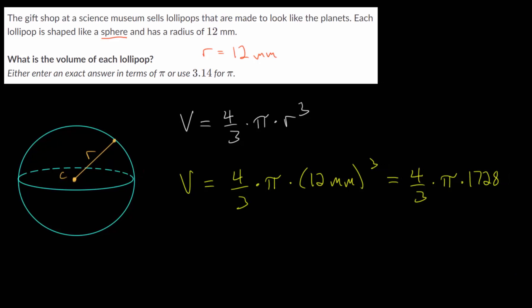So we have four-thirds multiplied by pi multiplied by 1,728. And we multiplied millimeters three times, so we will have cubic millimeters. And if we divide this by 3, that brings it to 576. And 576 multiplied by 4 will bring us to 2,304. We're multiplying all this by pi, and we have cubic millimeters. So at this point,